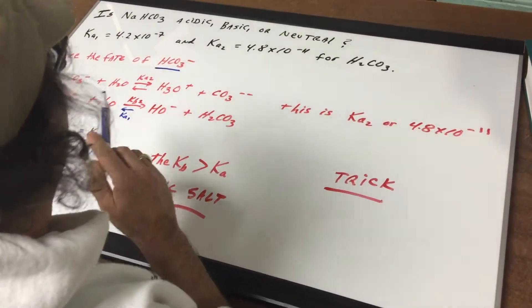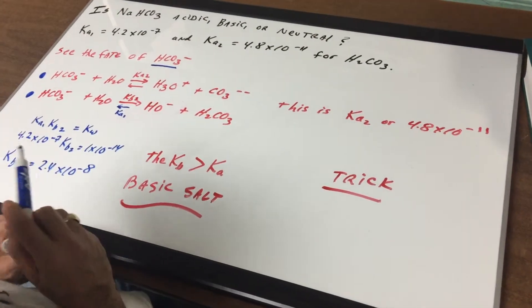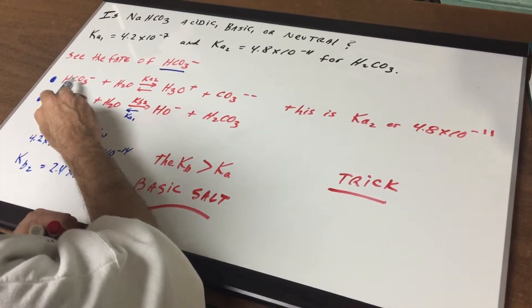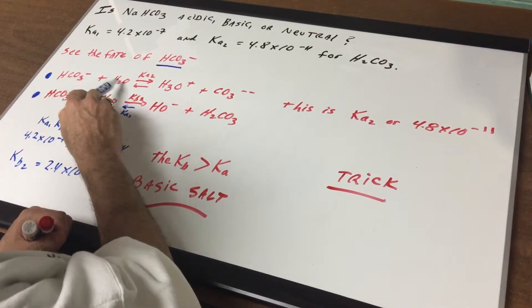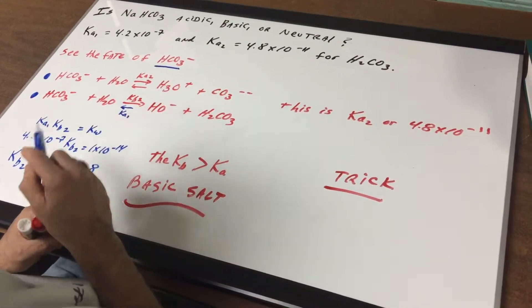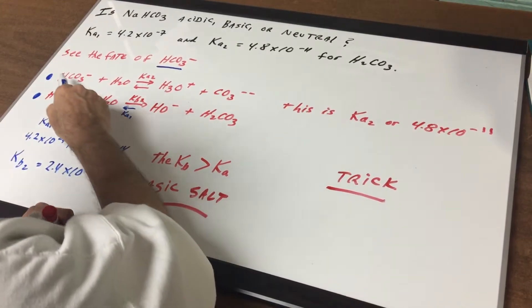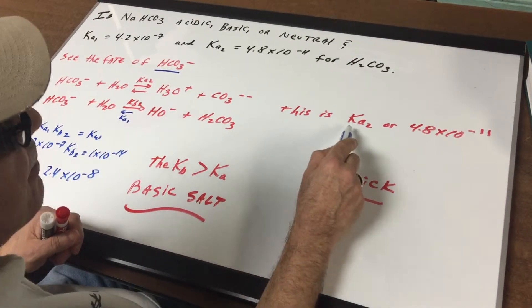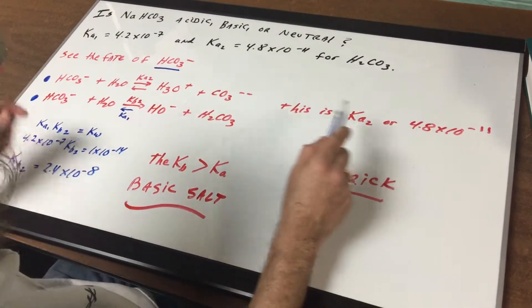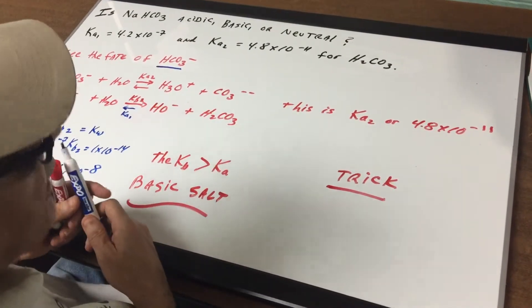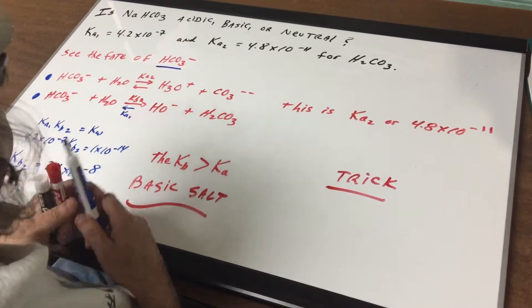Let's first see what happens if it's acting as an acid. If it's acting as an acid, you put it in water, it transfers an H, and that will give H3O plus plus CO3 2-minus. Now I hope you realize that that step is simply the Ka2, meaning that was the second ionization step of this acid.